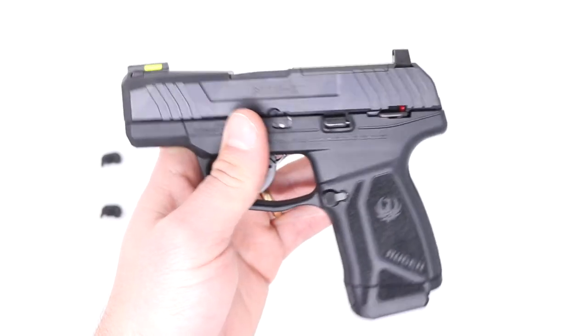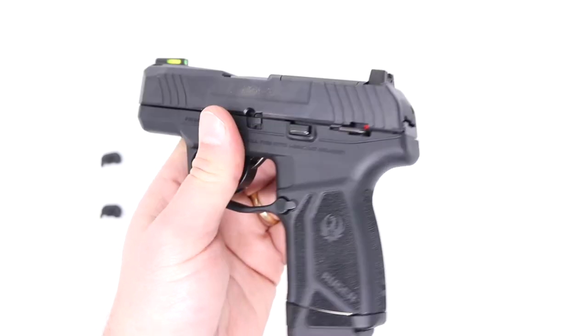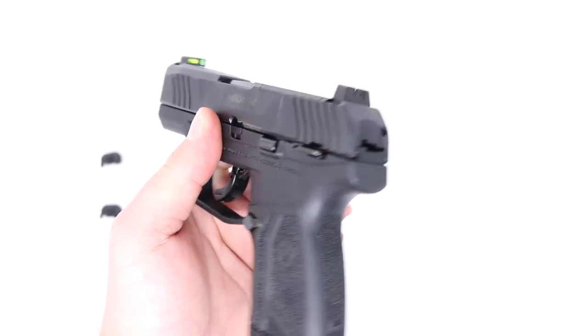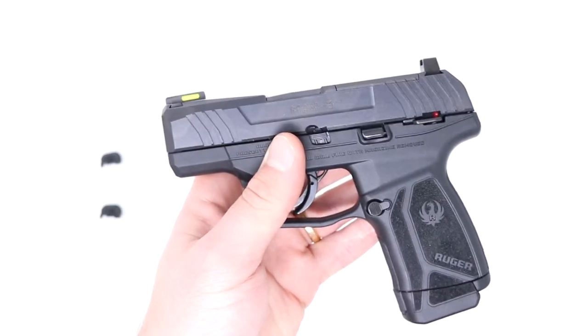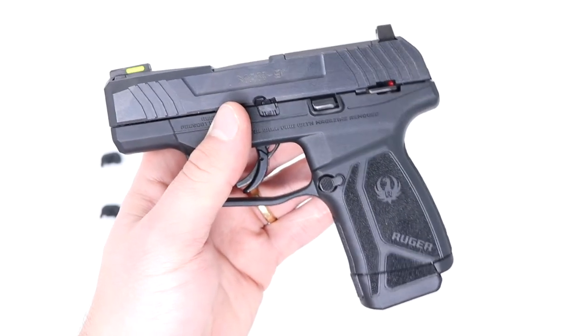Makershot makes an aluminum 3D slide plate cover for the new Ruger Max 9 to replace the plastic OEM slide plate. To get started, you're going to need a 1/16th punch.